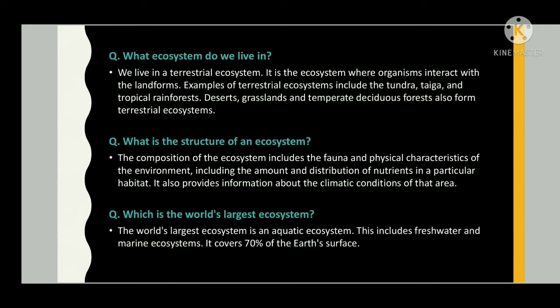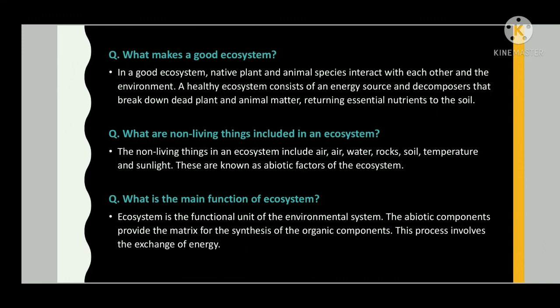The world's largest ecosystem is an aquatic ecosystem, which includes freshwater and marine ecosystems and covers 70 percent of the earth's surface. In a good ecosystem, native plant and animal species interact with each other and the environment. A healthy ecosystem consists of an energy source and decomposers that break down dead plant and animal matter, returning essential nutrients to the soil. The non-living things in an ecosystem include air, water, rocks, soil, temperature, and sunlight.